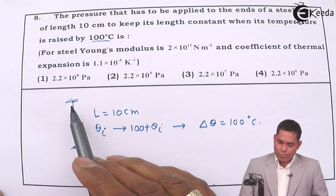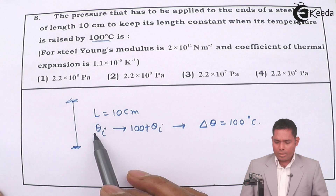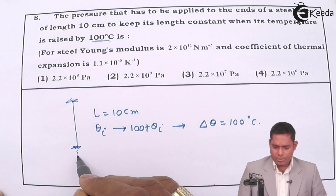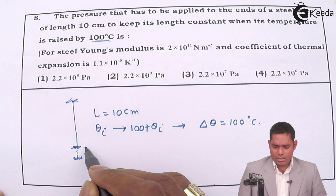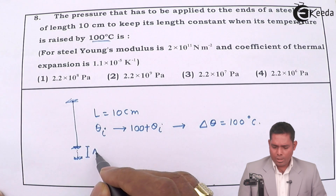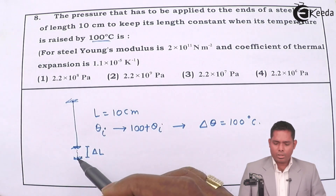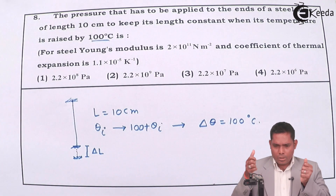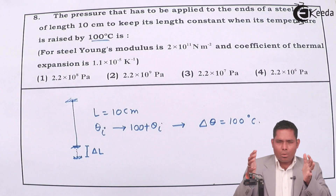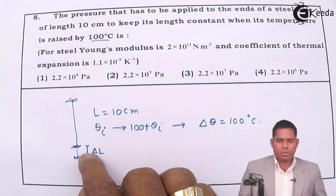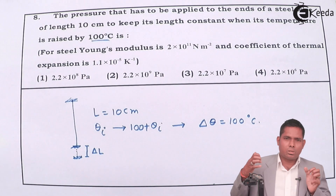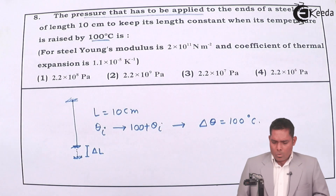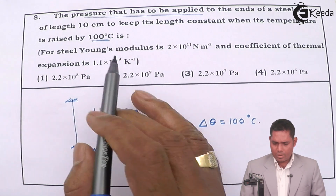If this is the length at θᵢ, then after a temperature rise of 100°C the wire undergoes an extension of some value δL. But we want to overcome this elongation to keep the length constant. The wire wants to expand, so we must apply force or pressure in the opposite direction to counterbalance it. The question is: how much pressure must be applied to maintain this length?